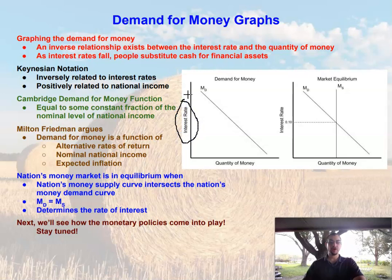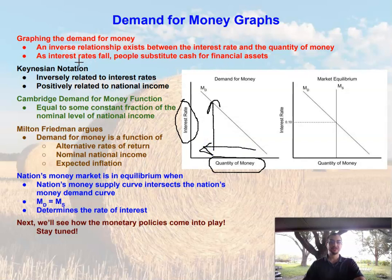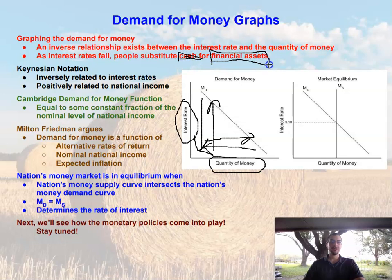Let's dive into this graph. The interest rate is on our vertical axis and the quantity of money — the amount of cash we're holding — is on the horizontal axis. As interest rates go up, people hold less cash and substitute financial assets for cash. As interest rates fall, the quantity of money demanded goes up, and people substitute cash for financial assets.